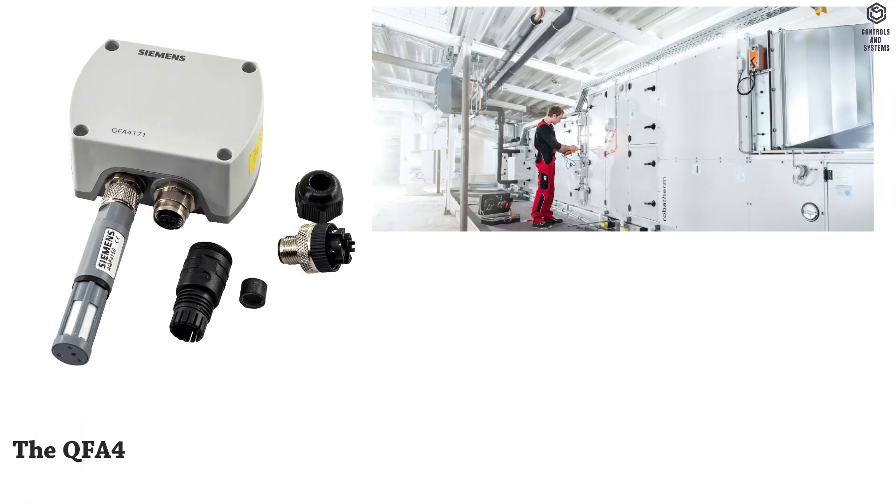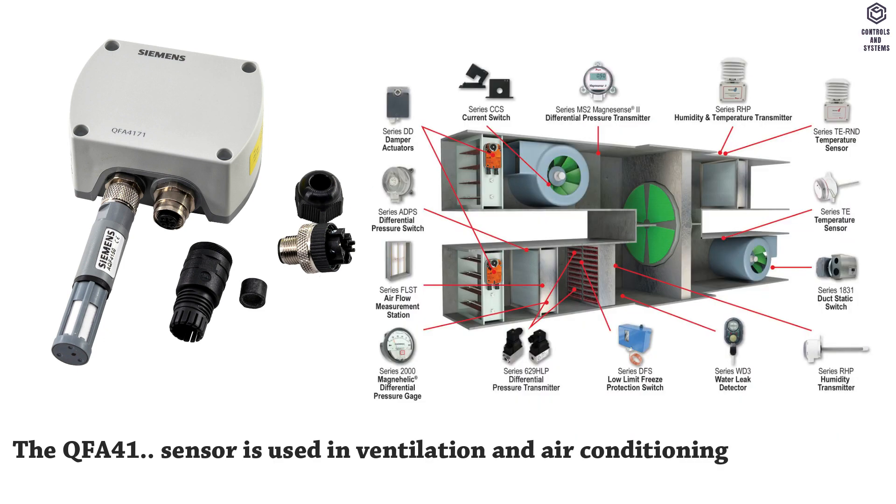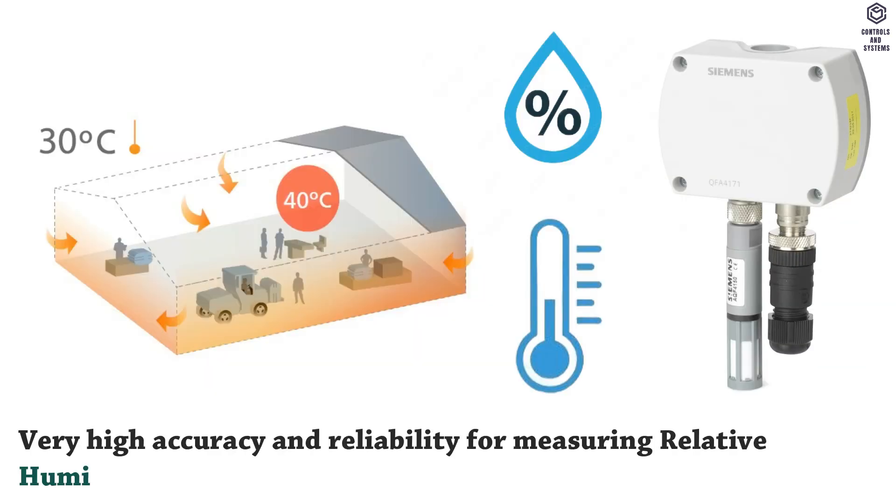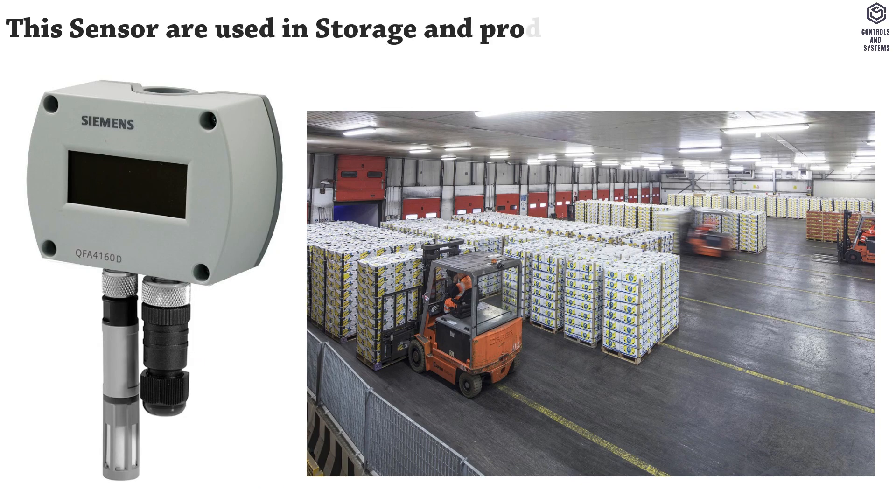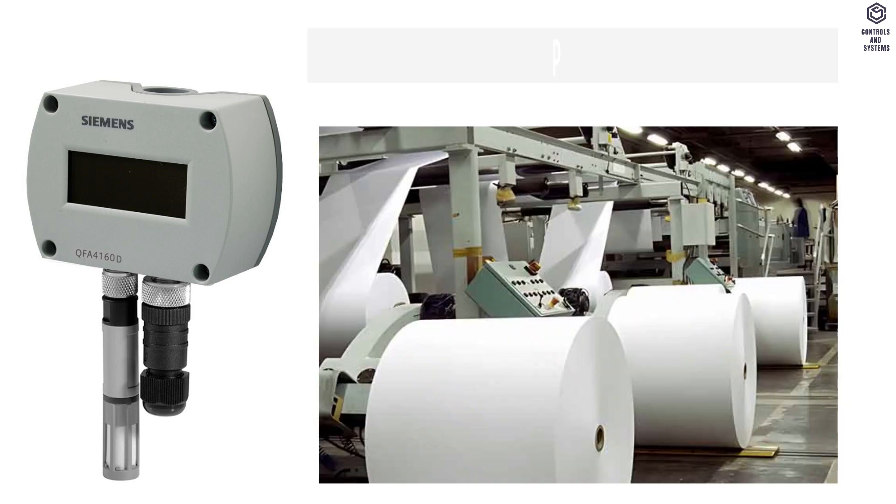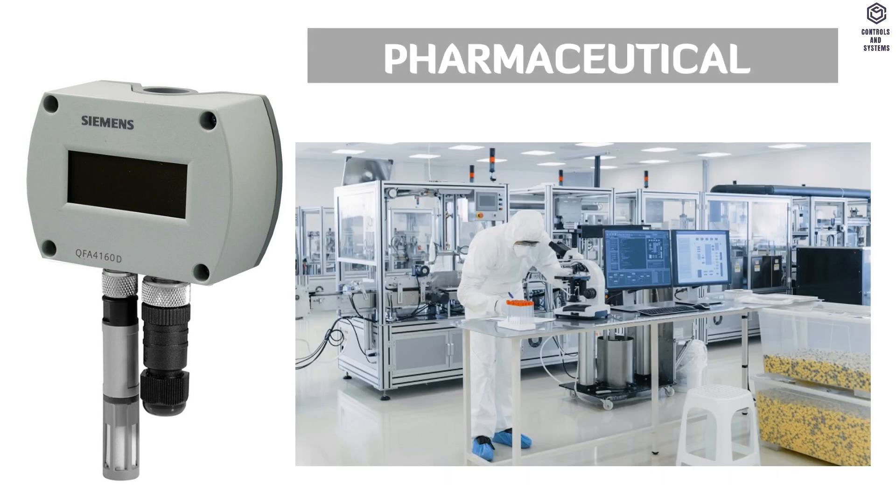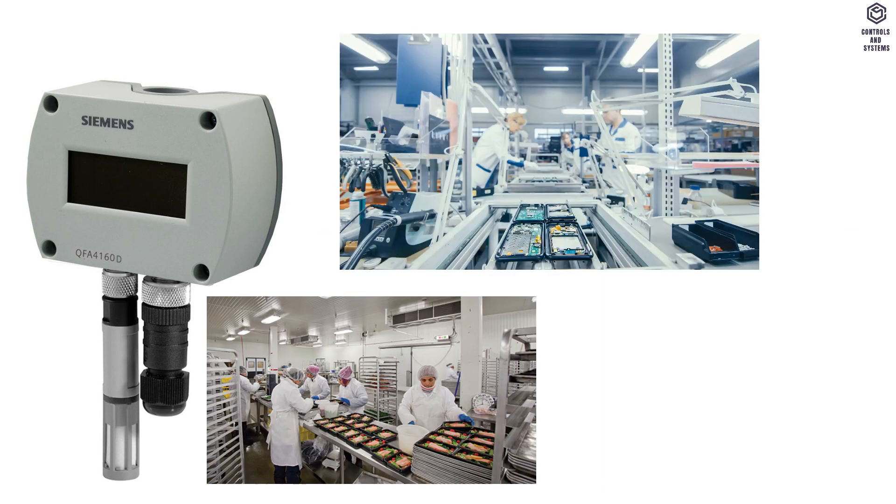The QFA41 Series sensor is used in ventilation and air conditioning plants requiring very high accuracy and reliability for measuring relative humidity and temperature. These sensors are used in storage and production facilities like paper industries, textiles industries, pharmaceutical industries, chemical industries, electronics industries, etc.